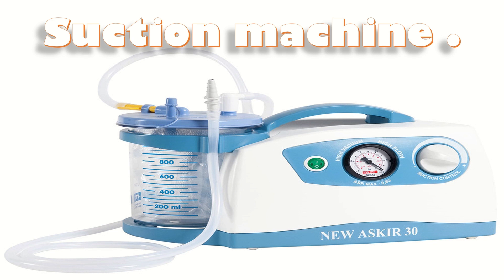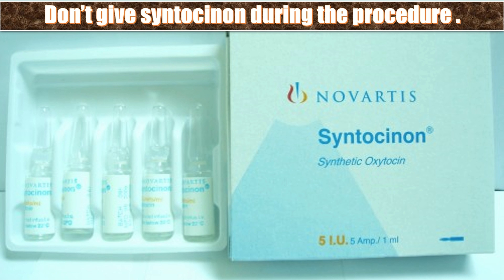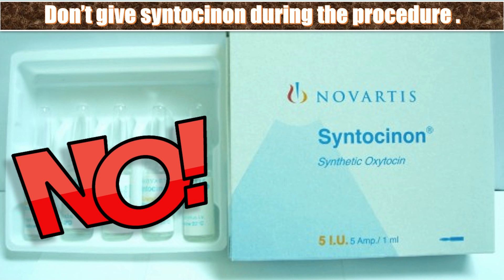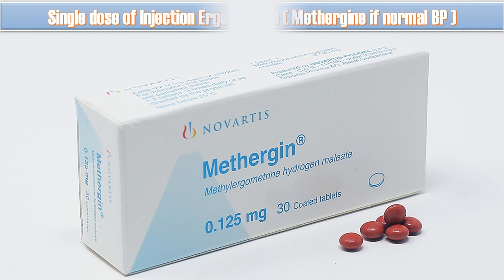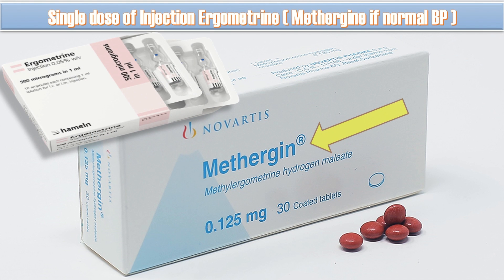Attach the suction cannula or catheter or Flebus tube of 12 mm to a suction tube and suction machine and start suctioning. Do not give Syntocinon during the procedure because of the increased risk of dissemination of the molar tissue with repeated contractions, which increases the risk of chemotherapy demand. If the patient is bleeding heavily, the alternative choice is injection ergometrine. Give a single dose of injection ergometrine, but methergin is given if there is normal blood pressure, as it causes a single uterine contraction with no increased risk of chemotherapy.